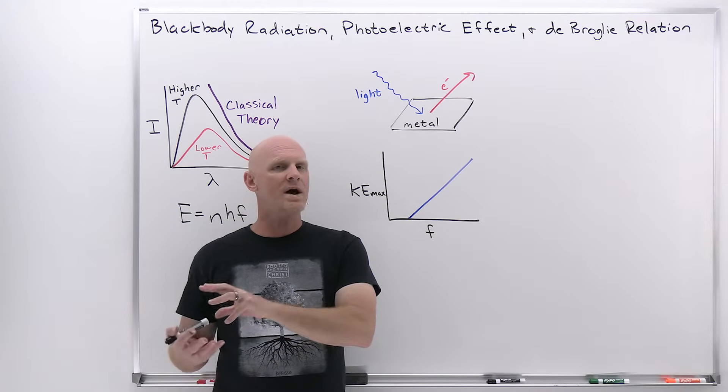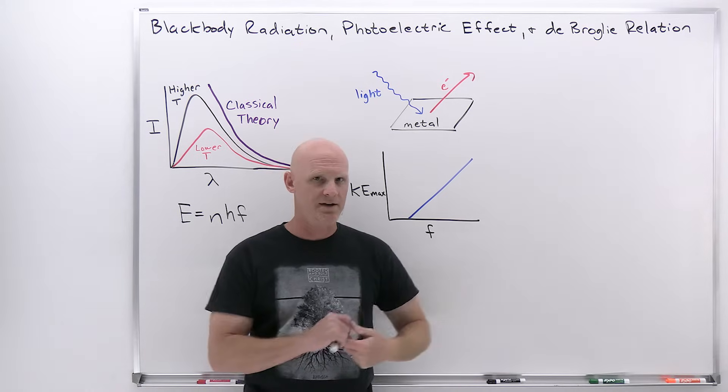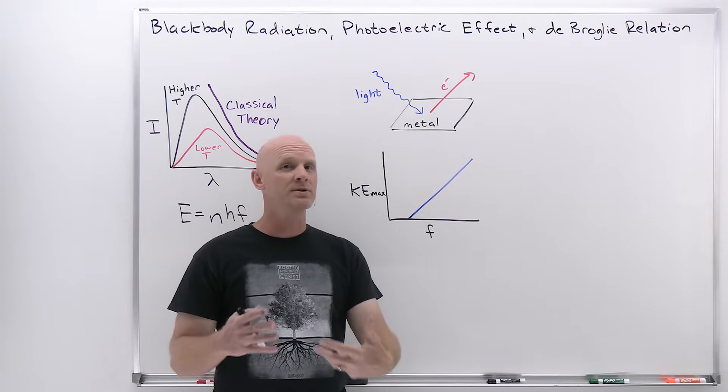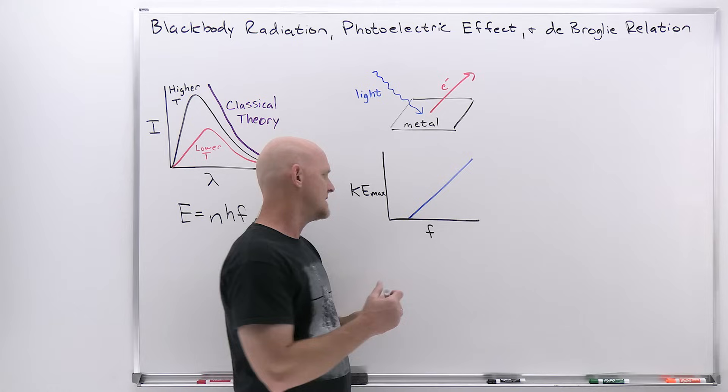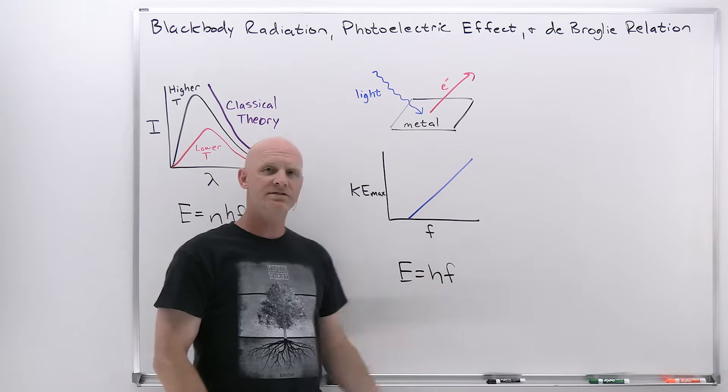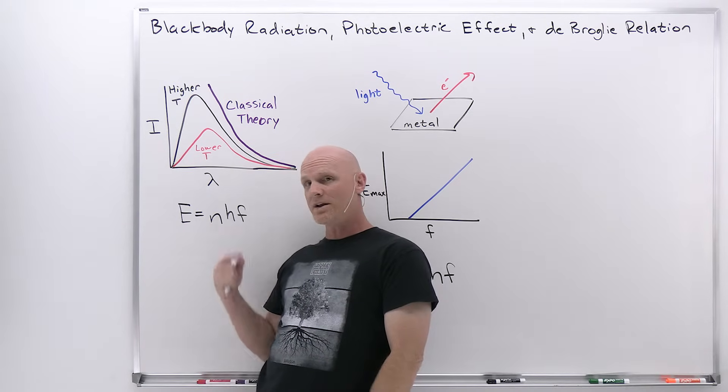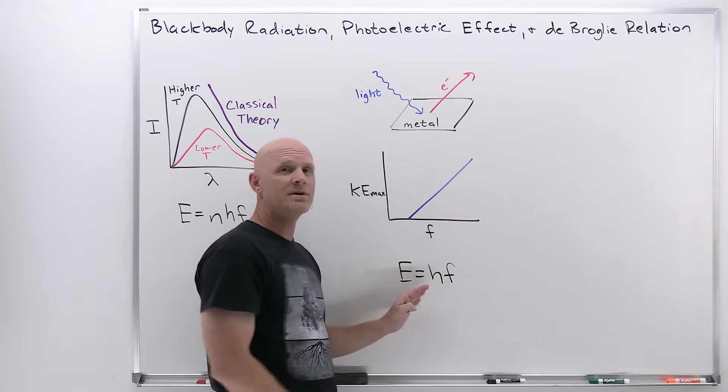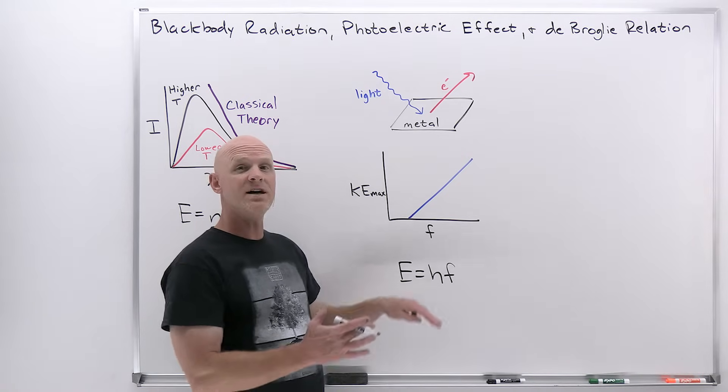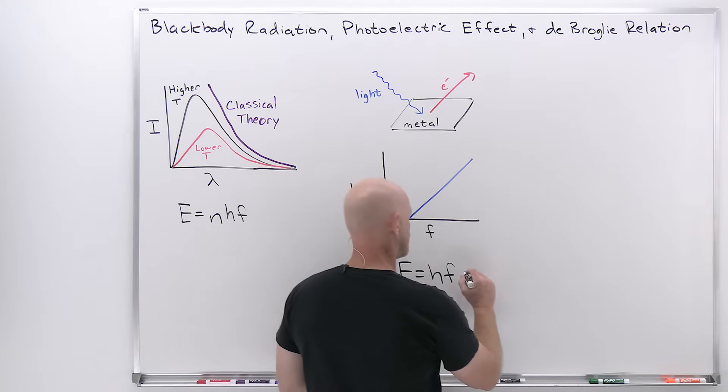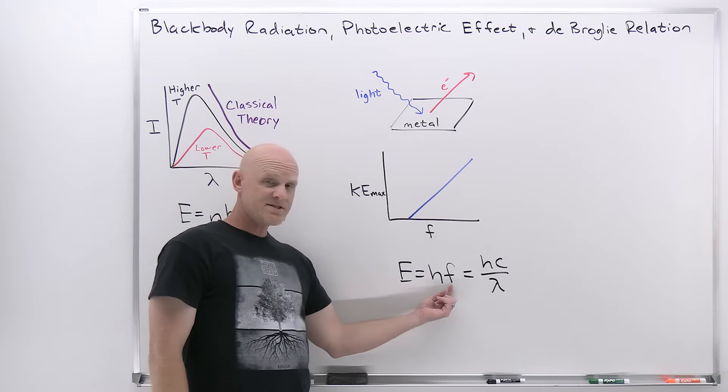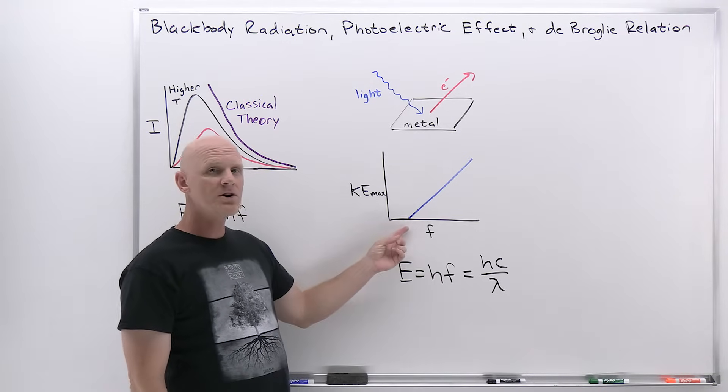Somehow as frequency was going up, Einstein proposed that the energy of the light was going up as well, causing the interaction with these electrons that are being ejected to have more energy. And so what he described was that light was not merely wave-like in nature, it was also particle-like in nature. Instead of being a continuous wave, it came in discrete packets, you might think of them as light bullets. And he called these light bullets photons. The energy of these photons was equal to hf, and so that's Planck's constant right there.